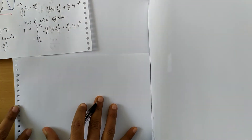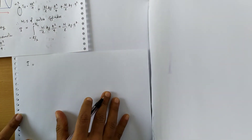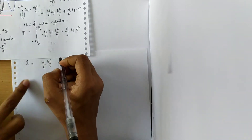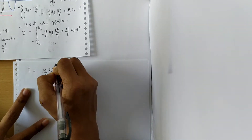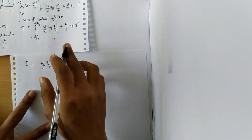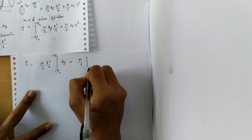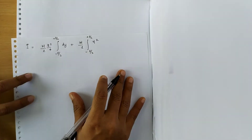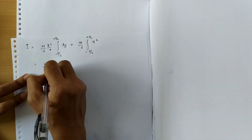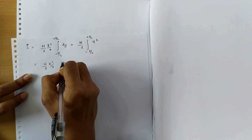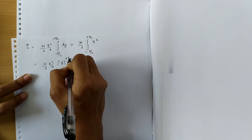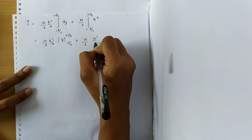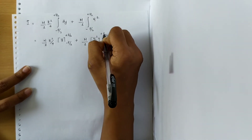Solving this integration: we take out M/L · R²/4 and integrate dy from −L/2 to +L/2, plus we take out M/L and integrate y² from −L/2 to +L/2. This can be written as M/L · R²/4 · [y] from −L/2 to +L/2, plus M/L · [y³/3] from −L/2 to +L/2.